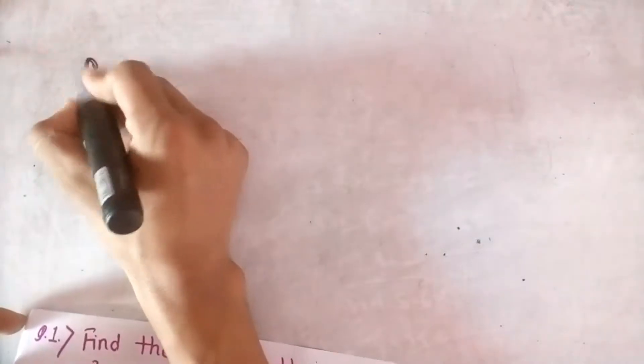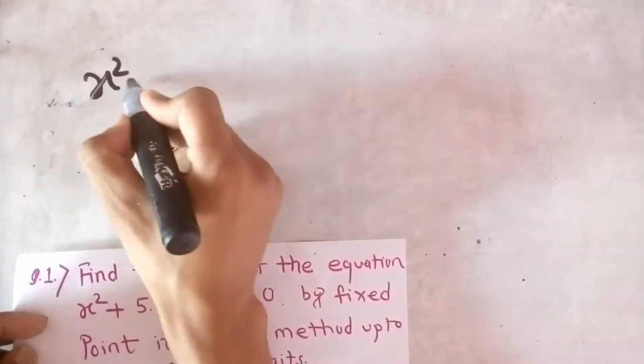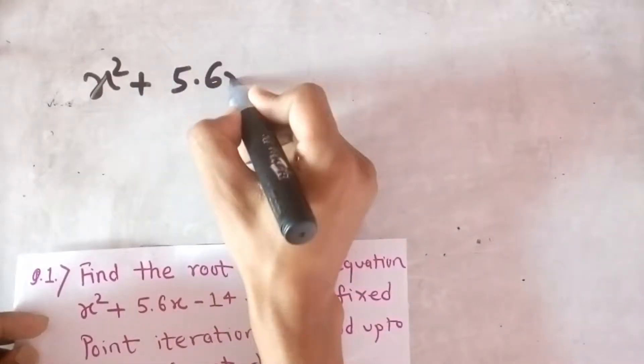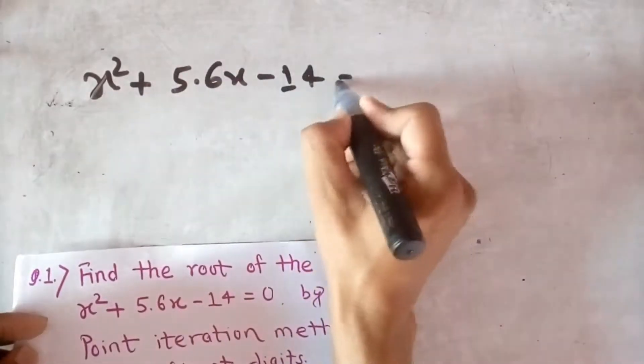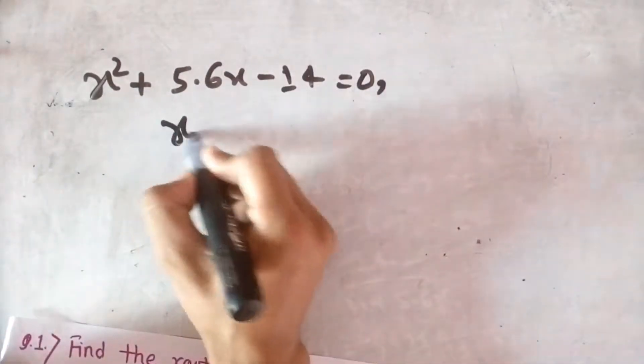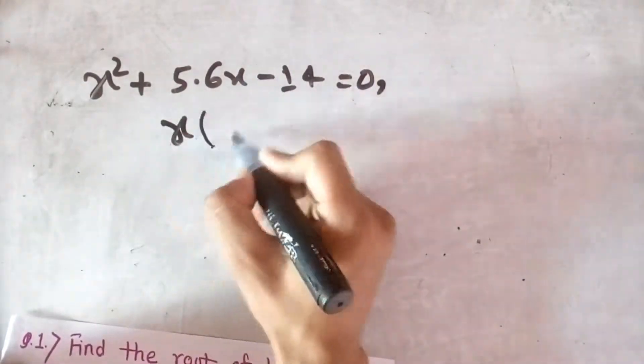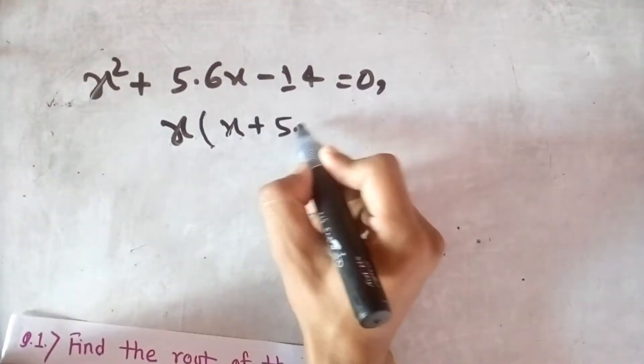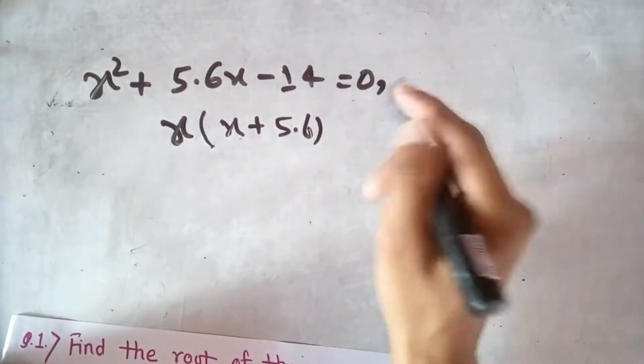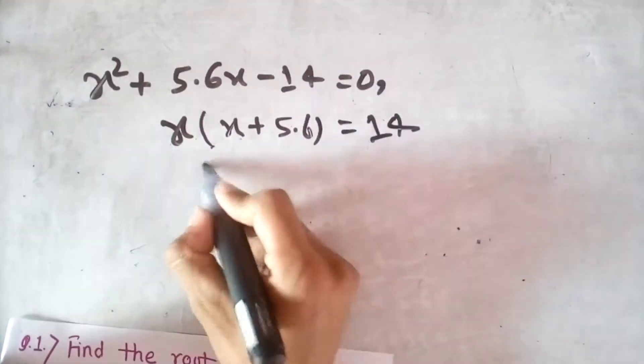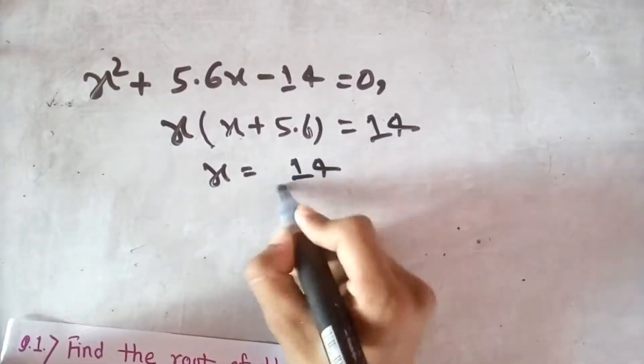Okay, given is x squared plus 5.6x minus 14 equal to 0. So here we have to take the x common, so x plus 5.6, let's take the 14 here, so here is 14.